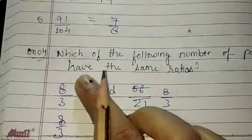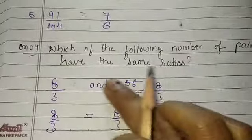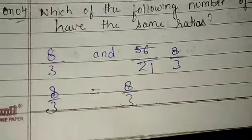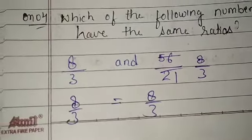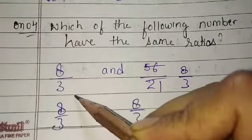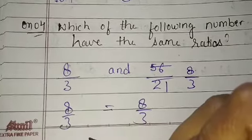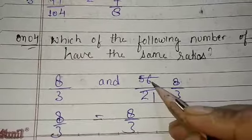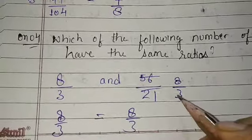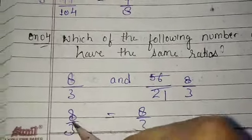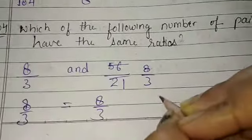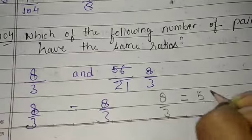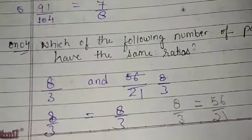Question number four is which of the following number of pairs have the same ratio? Eight by three, this cannot be further simplified in simplest form. Fifty six or twenty one, which table? Seven eight is fifty six and seven three is twenty one. So eight by three is equal to eight by three. It means eight by three is same as a ratio of fifty six over twenty one.